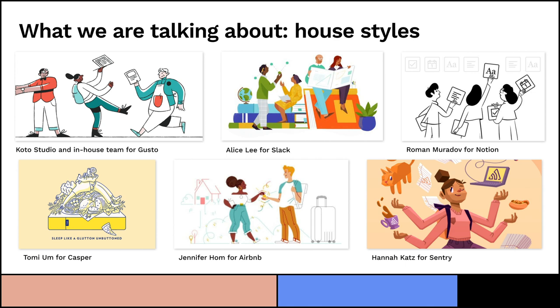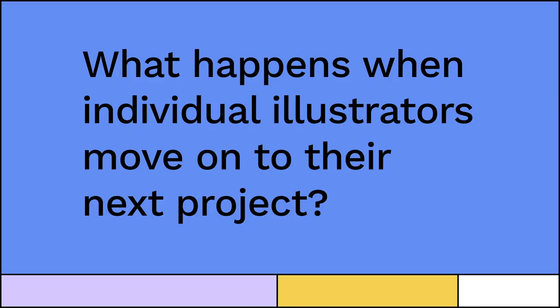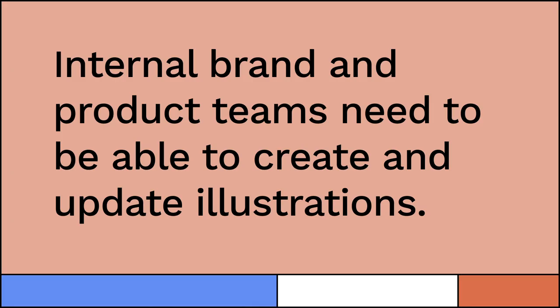Slack is one of my favorite examples. Alice Lee, who is incredibly talented, designed a whole illustration system for Slack. It's related to her style, but it was developed very specifically for Slack, and now they get to use it. In the same way, I'm sure you recognize some styles on the board as being the house style of that brand — especially something like Airbnb, which is fairly new. But what happens when individual illustrators move on to their next project? Alice Lee is going to go do something else and won't be working for Slack anymore. What do you as product or brand designers do? Internal brand and product teams need to be able to create and update illustrations.